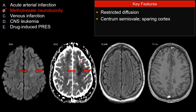Notice that the involvement typically involves the centricernal valley — the deep white matter — with sparing of the cortex. So that makes arterial infarction unusual, because infarction typically has a wedge shape involving the cortex rather than just involvement of the white matter.